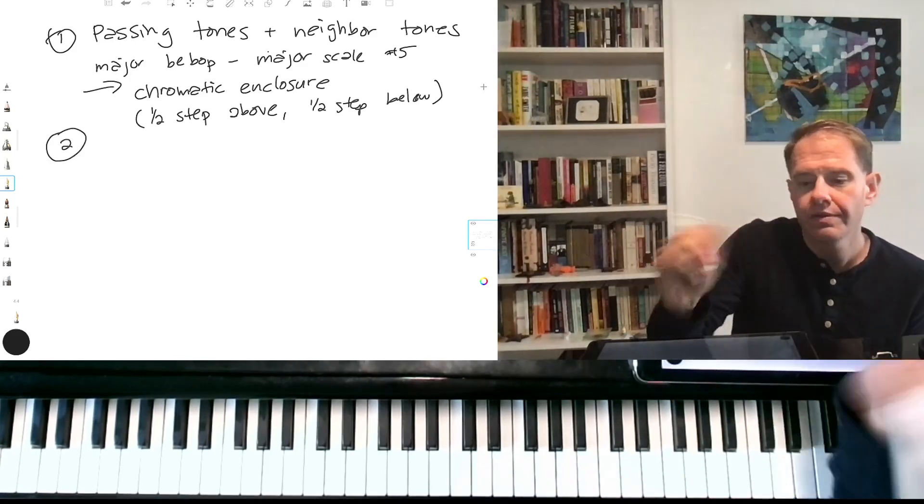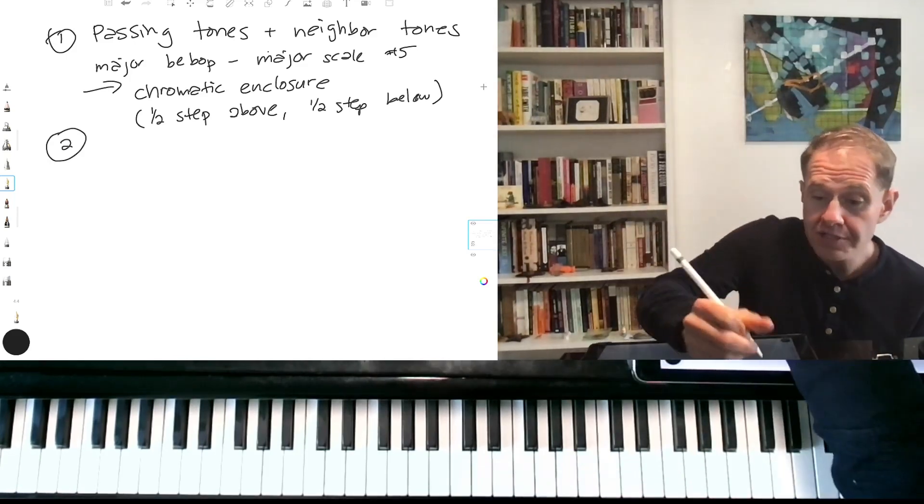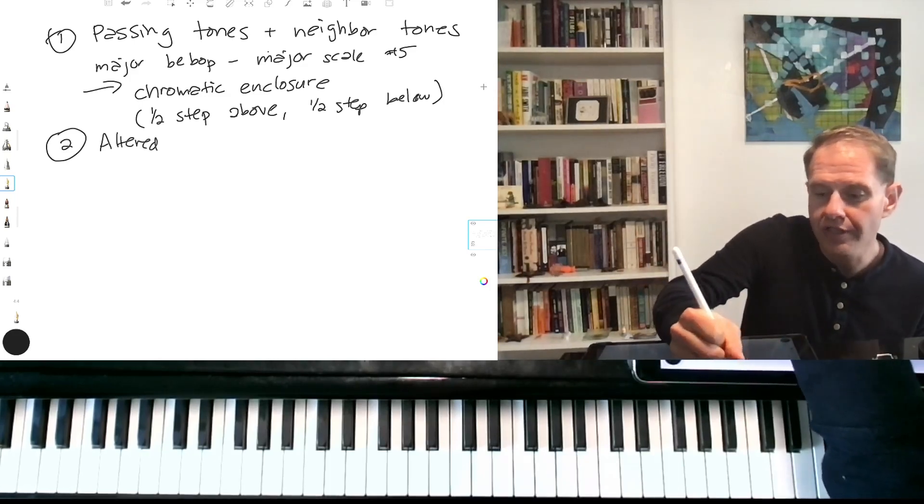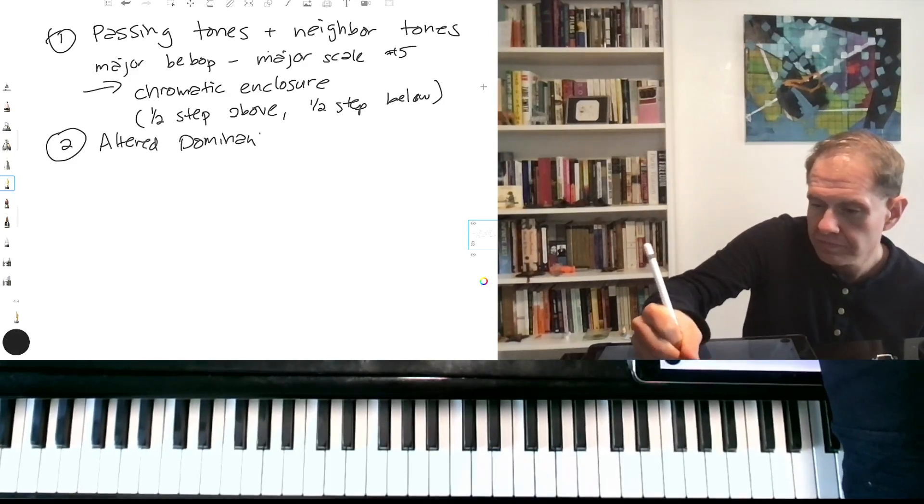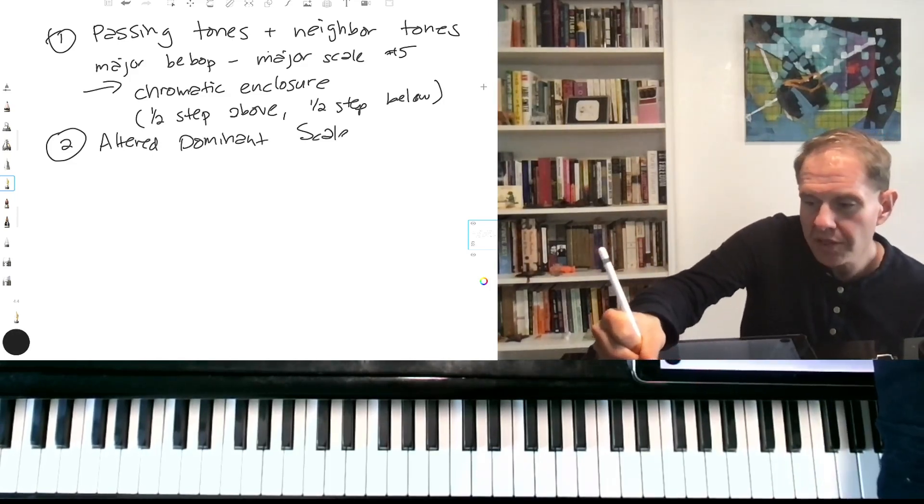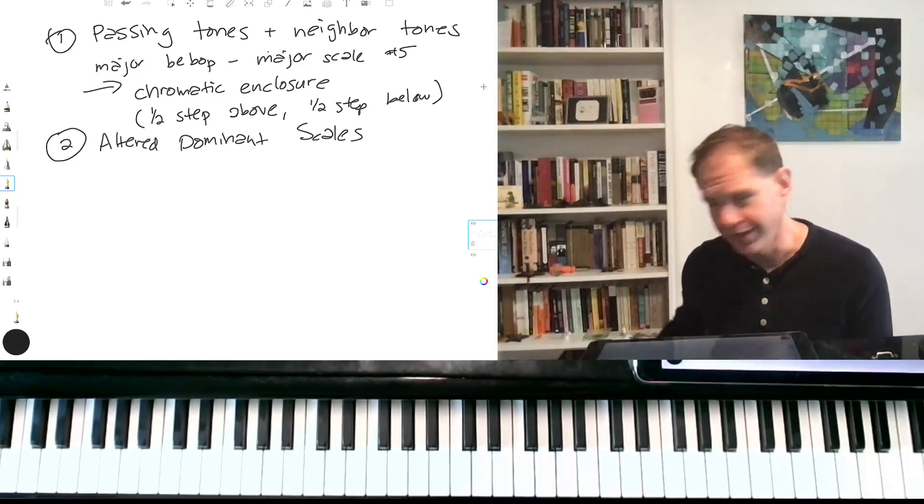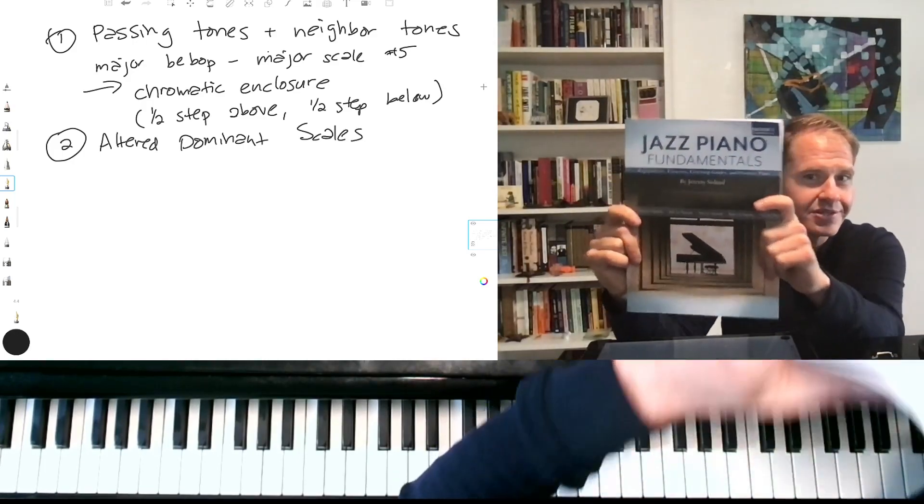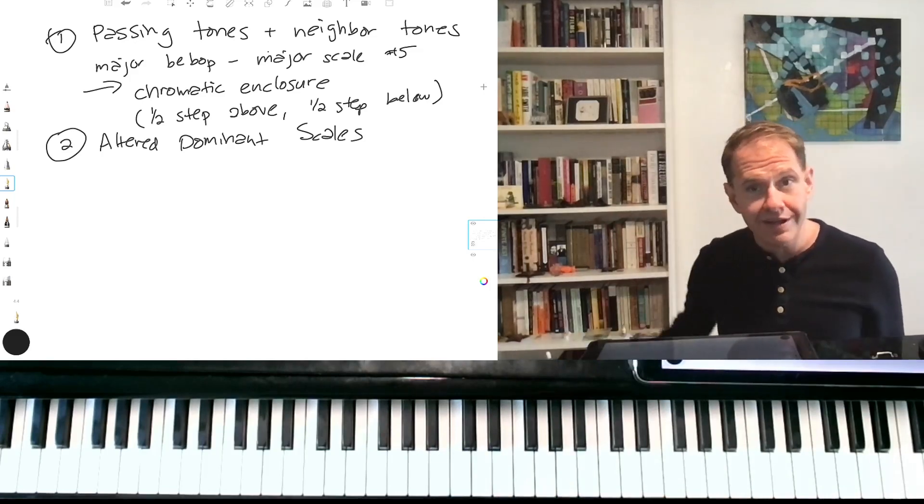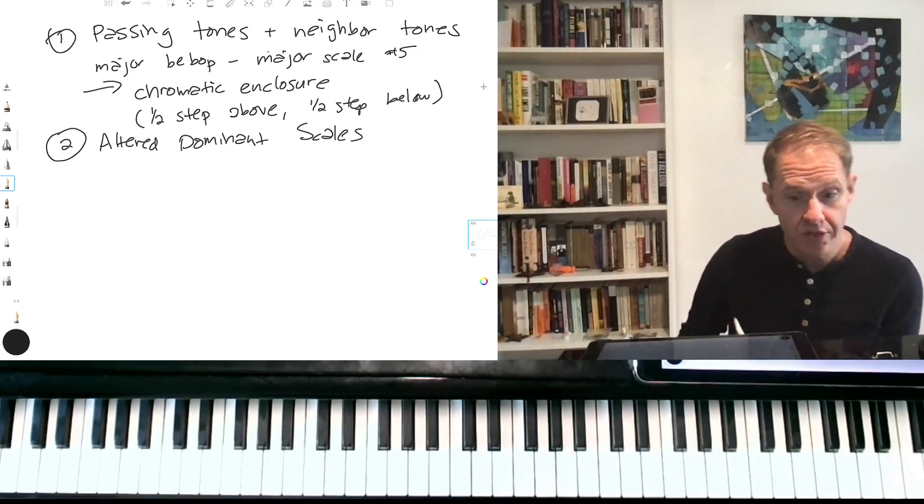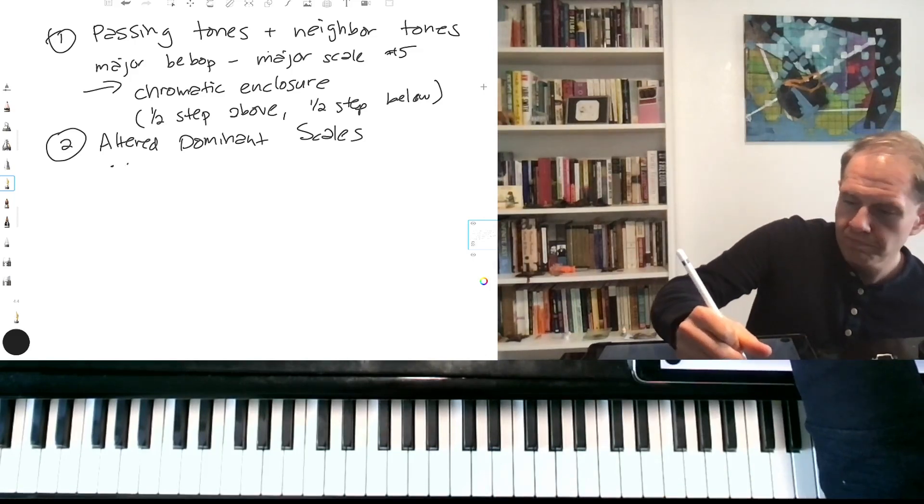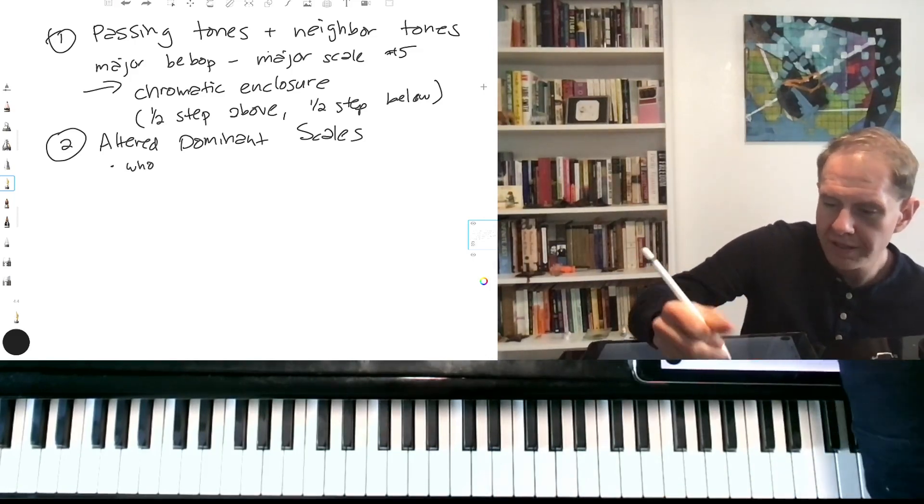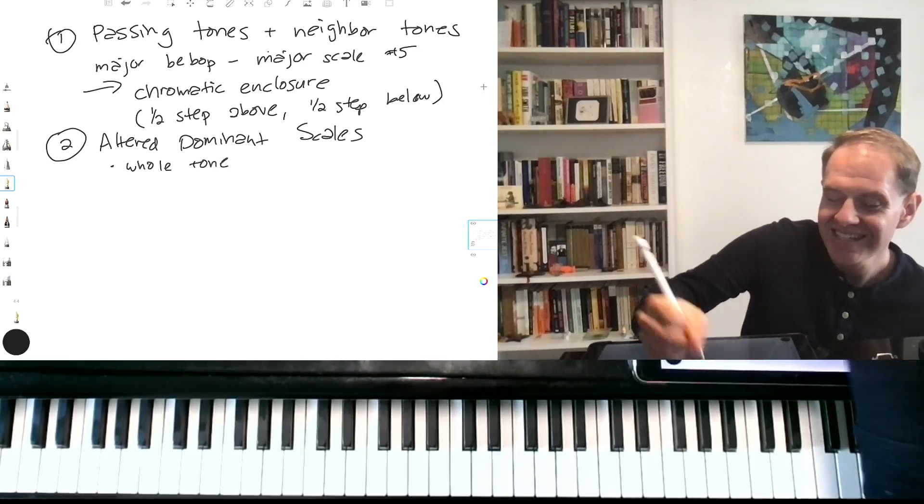But we could also choose some different scales. And particularly when we get to dominant chords, we have this whole category of altered dominant scales. I'm going to go through them kind of quickly here, but there is a full listing of great altered dominant scales in Jazz Piano Fundamentals. I think chapter 11 or chapter 12 is going to run you through some really good altered dominant scales. So whole tone—I spelled that poorly.